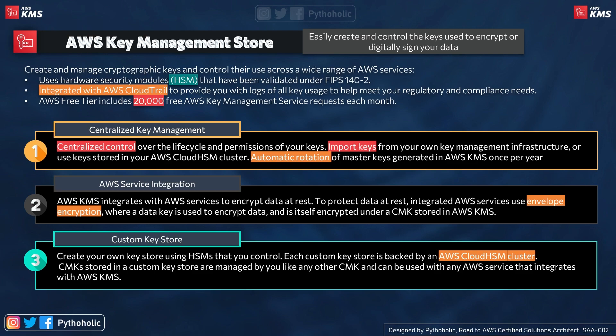The second benefit is AWS service integration. AWS KMS integrates with many AWS services to encrypt data at rest. To protect your data at rest, integrated AWS services use envelope encryption, where a data key encrypts the data and is itself encrypted under a CMK (customer master key) stored in AWS KMS.